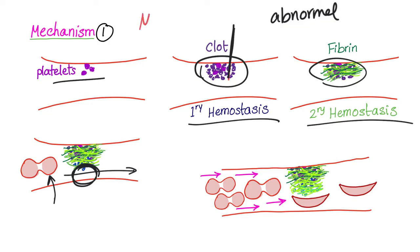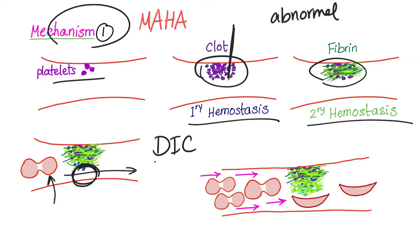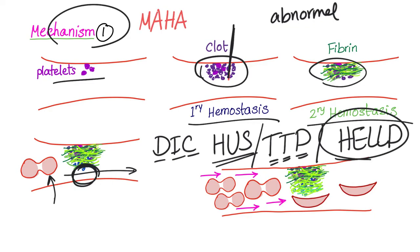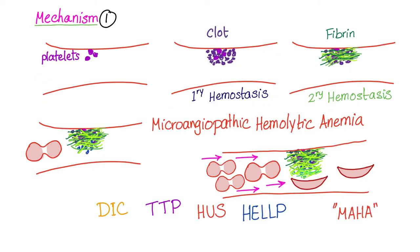We call this microangiopathic hemolytic anemia. Conditions where this happens include DIC (disseminated intravascular coagulation), HUS (hemolytic uremic syndrome), TTP (thrombotic thrombocytopenic purpura), and also HELLP syndrome, which occurs in pregnant women. So the first mechanism is microangiopathic hemolytic anemia, with causes: DIC, TTP, HUS, and HELLP.